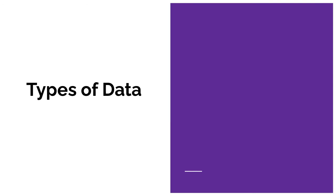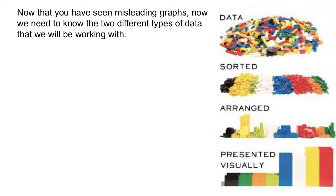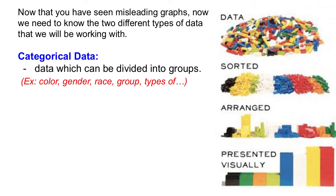Next, we're going to talk about different types of data. Now that you've seen some misleading graphs, we need to know how we can sort, arrange, and present data visually. The first type of data is called categorical data — things that can be divided up into groups. Examples would be your favorite color, gender, race, or types of shoe brands — things that can be categorized.